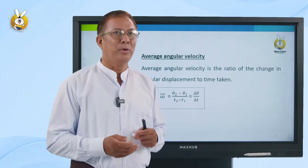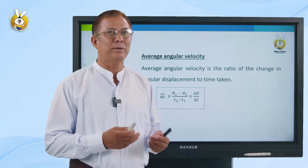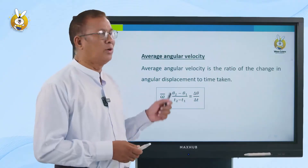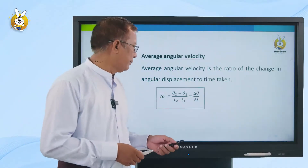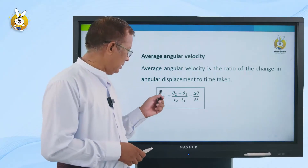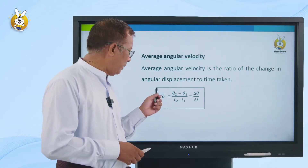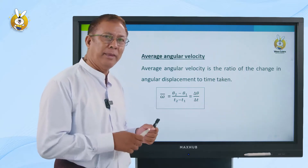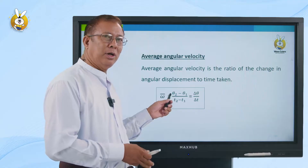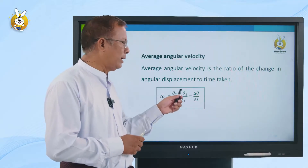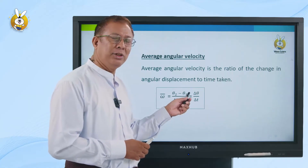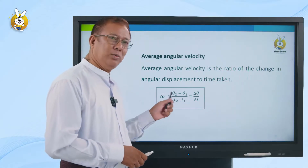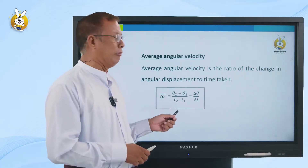We have a good definition. I will tell you the definition of average angular velocity. If you look at the omega bar, the omega bar is equal to delta theta divided by delta t.